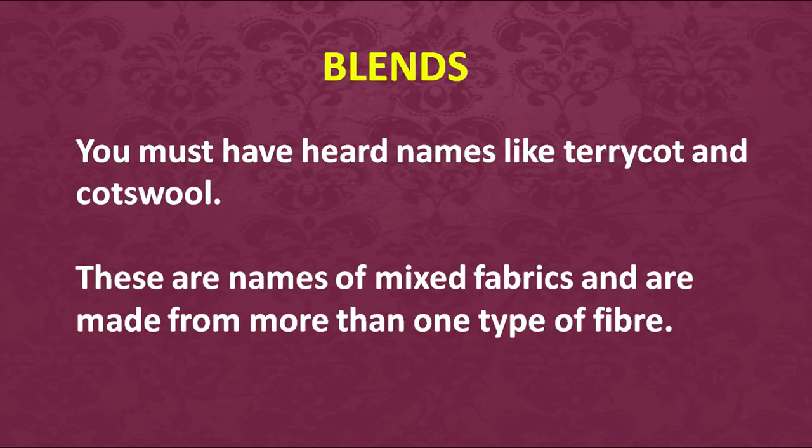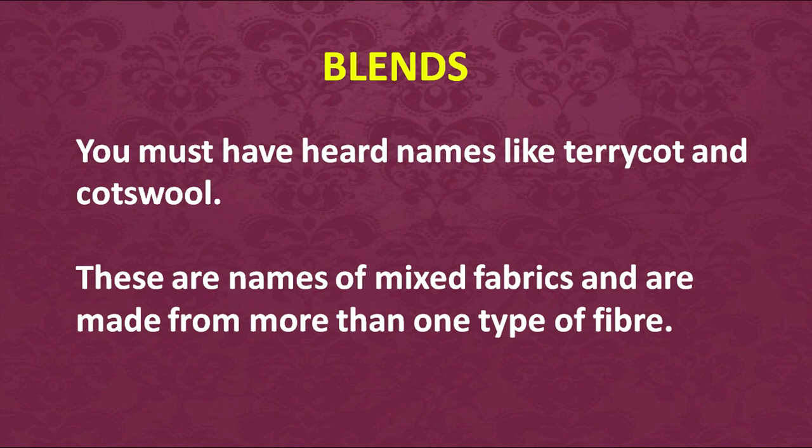Sometimes in the market it is difficult to find pure wool yarn — you find terry wool or terricot instead, which can be confusing. The concept here is blends: when two different kinds of fibers are used to produce a yarn. You may use cotton and wool to get a kotswool, or terrylene and cotton combined and twisted together to form a blend like terricot.